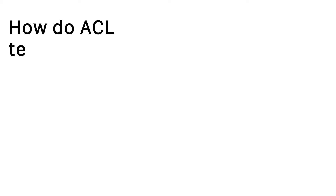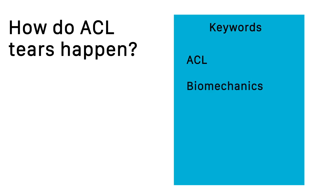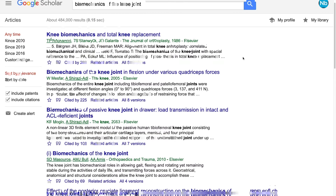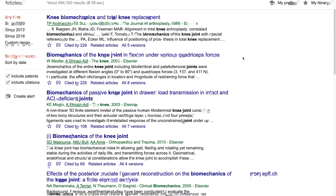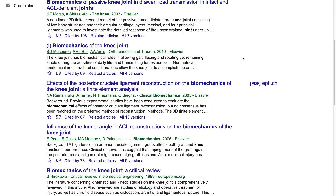The first step to literature searching is knowing the question your research is going to address. You can then pull out keywords to use in a database search. You want to use keywords that are broad enough to include all relevant articles on the topic, but specific enough that your search doesn't include unrelated studies.